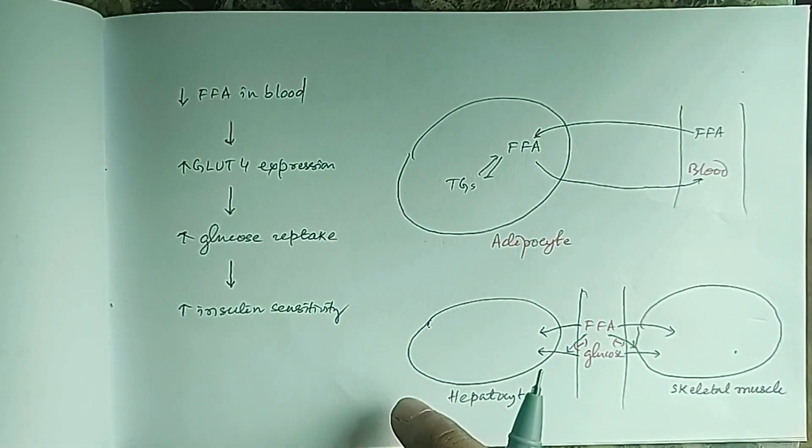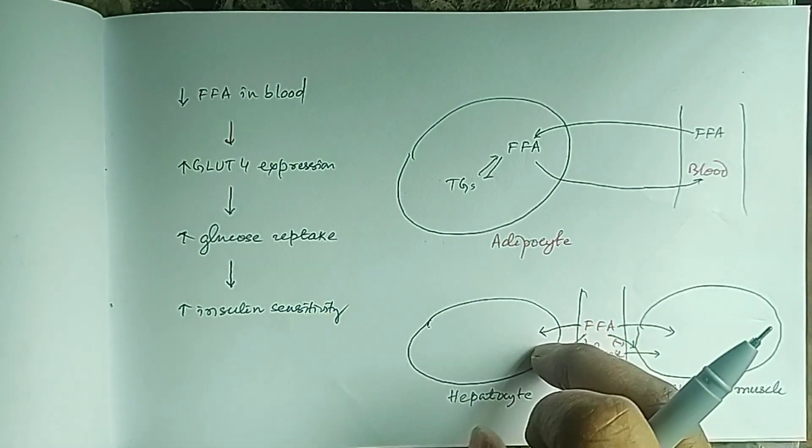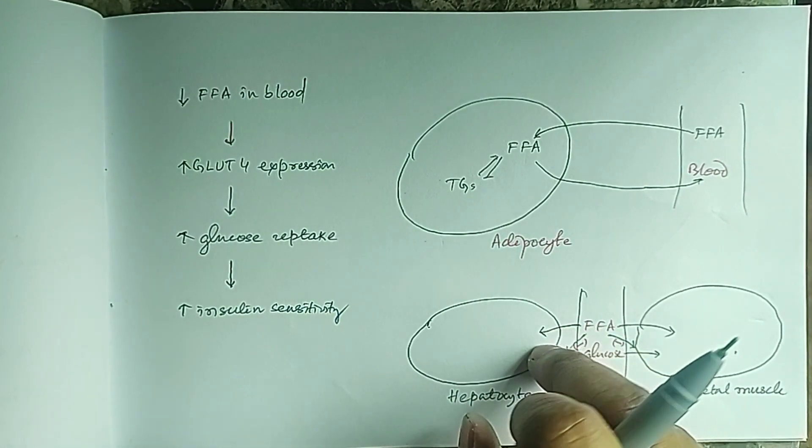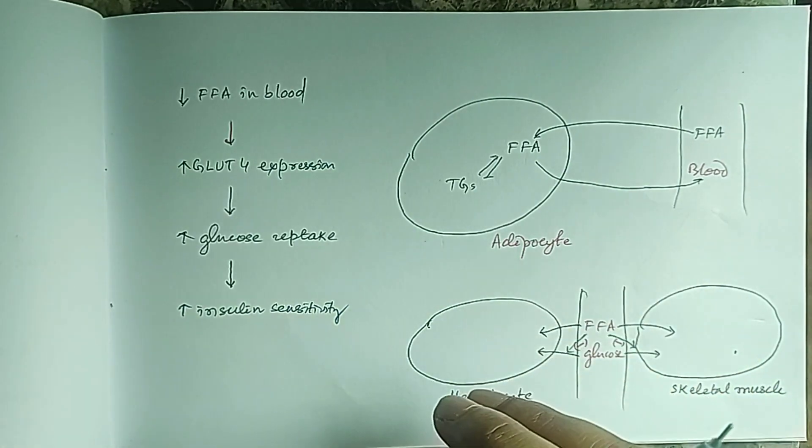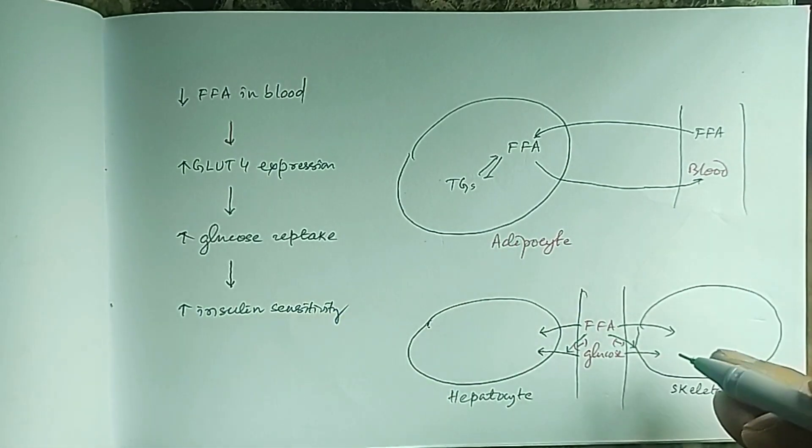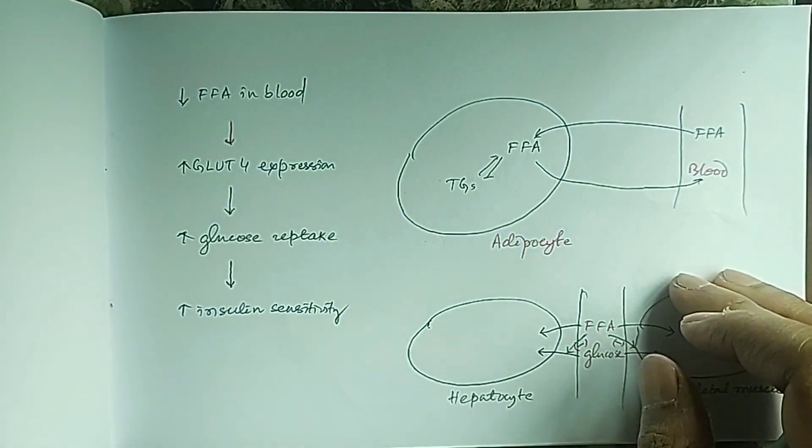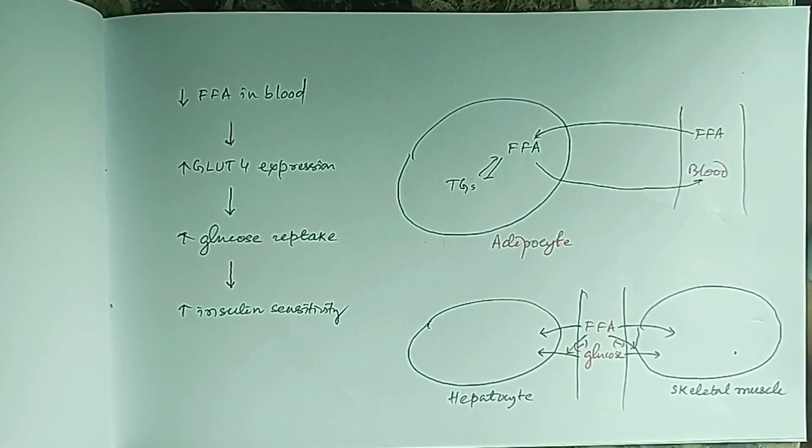You can use these drugs in cases of insulin resistance when even high doses of insulin are not functional. In that case, we can use thiazolidinediones, which can increase glucose uptake into hepatocytes and skeletal muscles. So this is all about PPAR gamma receptor and its function. Thank you.